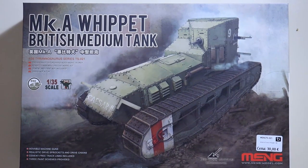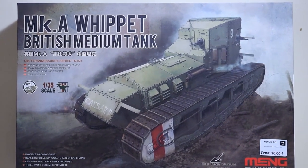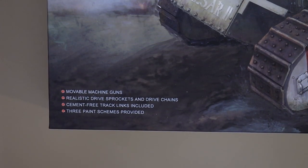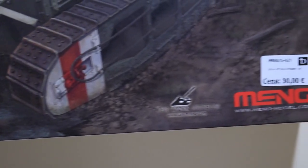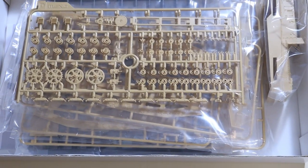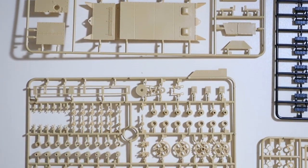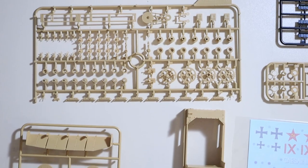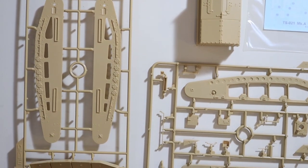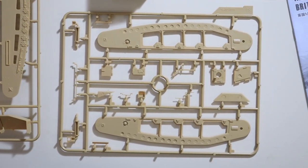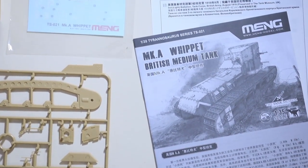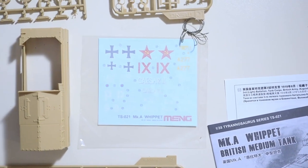For our second tank, this is a Mark A Whippet British medium tank. Model number TS021. Price point around 30 euros again. It is a 1:35th scale model that has movable machine guns, realistic drive sprockets and drive chains, cement-free track links included, and three paint schemes provided. Which is, hmm, which is not exactly accurate for this particular version of this model. Maybe it's a one-off. But, in this particular case, we only have a piece of paper depicting two paint schemes. Which, I don't know, maybe it's a one-off thing again. Or it's a regular occurrence. So, let me know down in the comments below if you have the same problem with your version of Whippet Mark A.